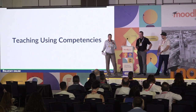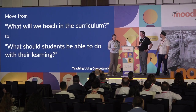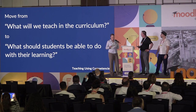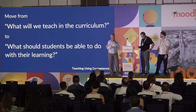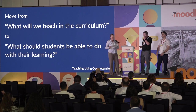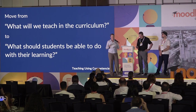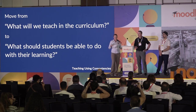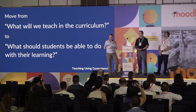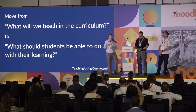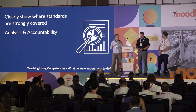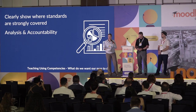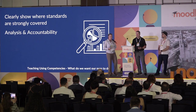I want to touch on teaching using competencies from the teacher side. By aligning our courses to standards in Moodle, we're able to analyze and communicate what our students are learning in each course — it's really transparent and clear. This shifts the curriculum question from 'what will we teach?' — a focus on content — to 'what should the students be able to do with their learning?' That puts the focus back on the students, and it clearly shows where those standards are strongly covered, allowing for accountability and analysis of our curriculum.